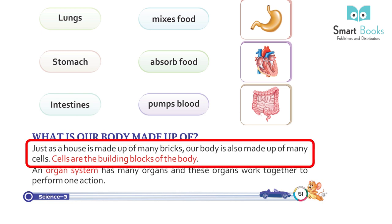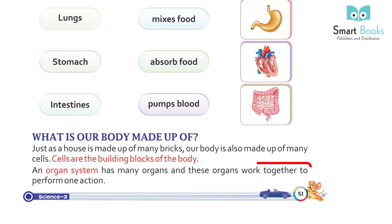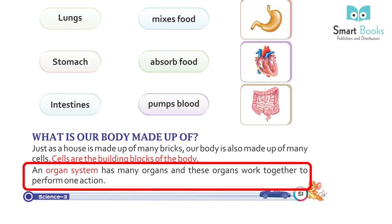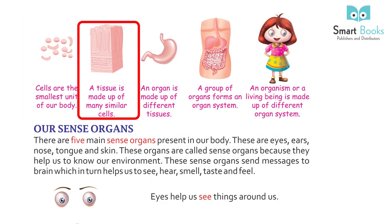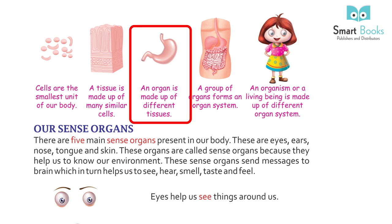Just as a house is made up of many bricks, our body is also made up of many cells. Cells are the building blocks of the body. The body has many organs and these organs work together to perform one action. Cells are the smallest unit of our body. A tissue is made up of many similar cells, and an organ is made up of different tissues.